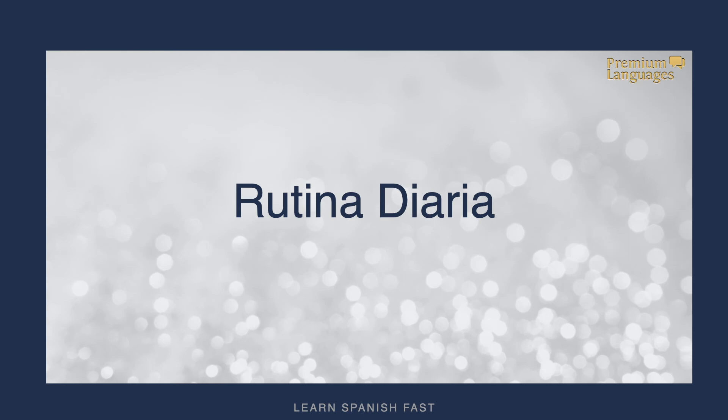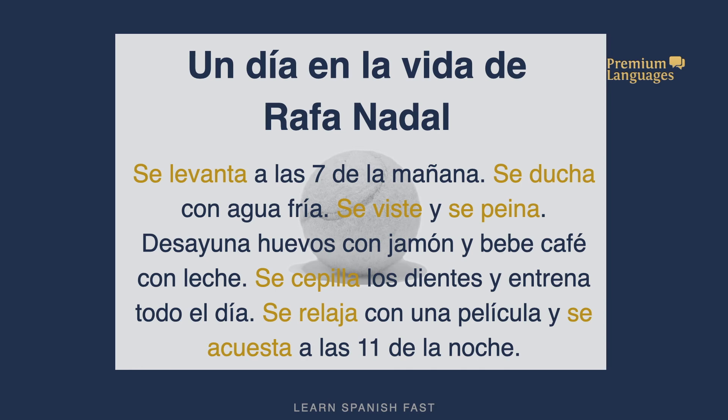Now we will see an example using the daily routine of a famous person — one day in the life of tennis player Rafa Nadal. We're going to use the third person, 'he': Se levanta a las siete de la mañana. Se ducha con agua fría. Se viste y se peina. Desayuna huevos con jamón y bebe café con leche. Se cepilla los dientes. Y entrena todo el día. Se relaja con una película. Y se acuesta a las once de la noche.